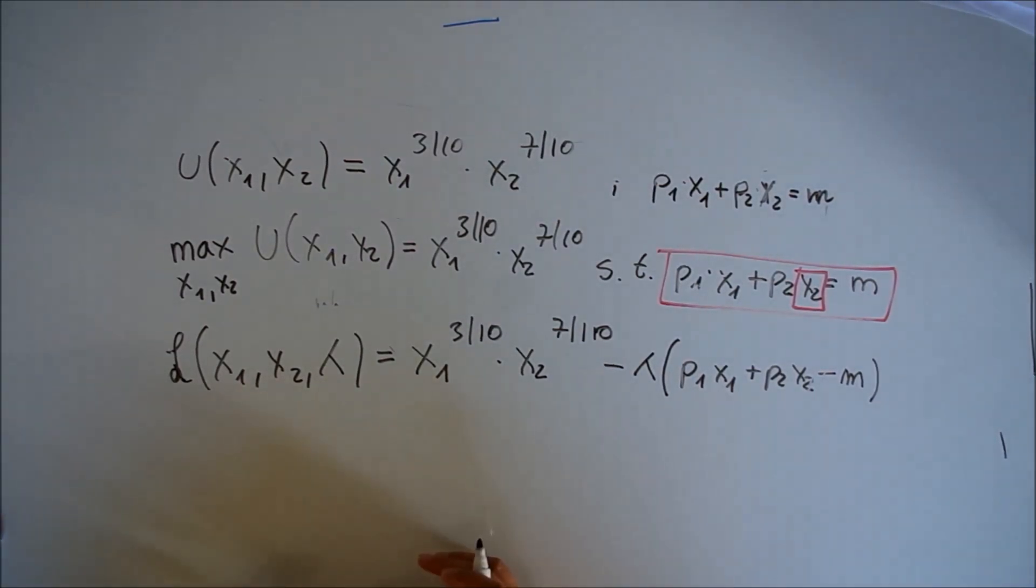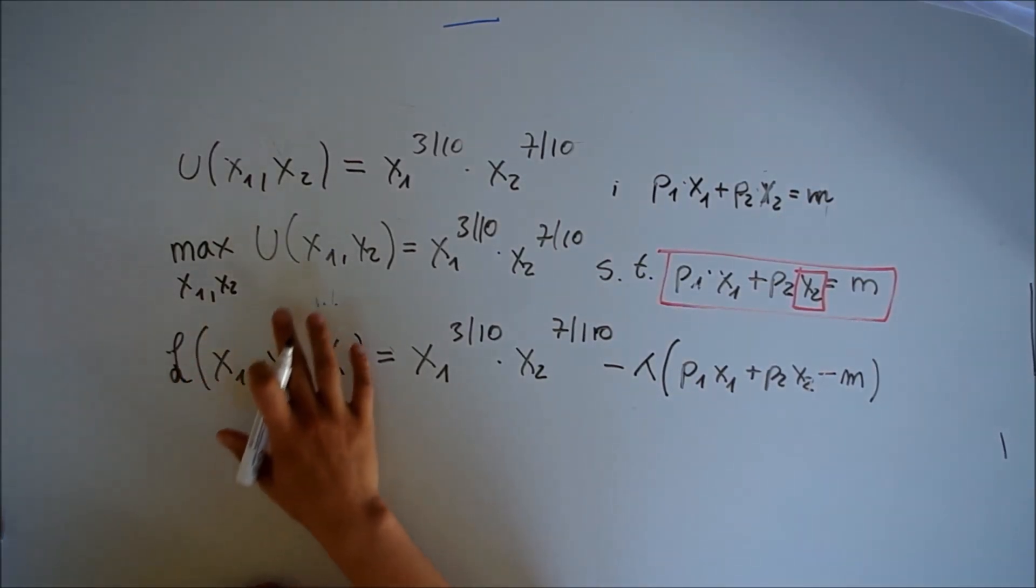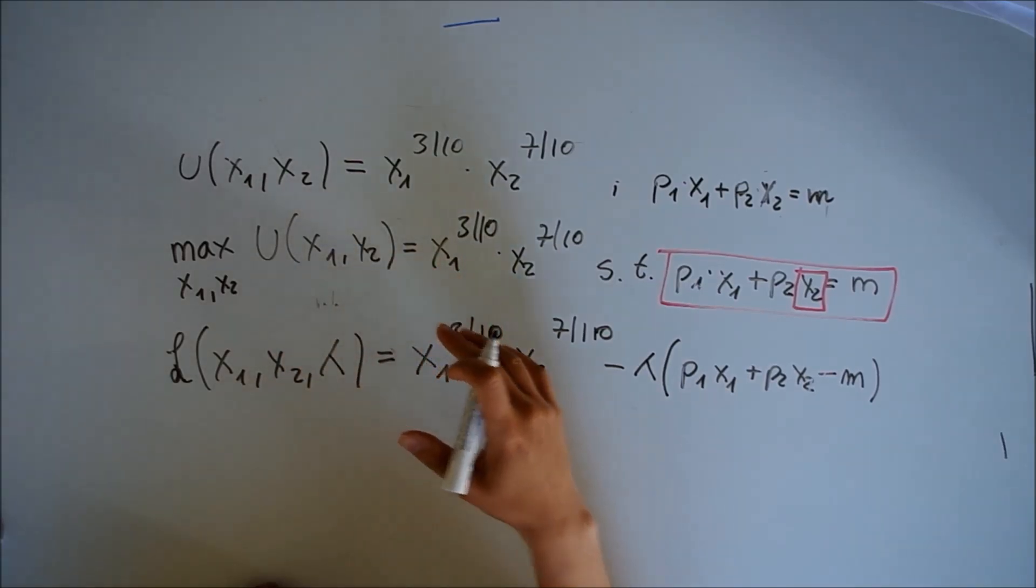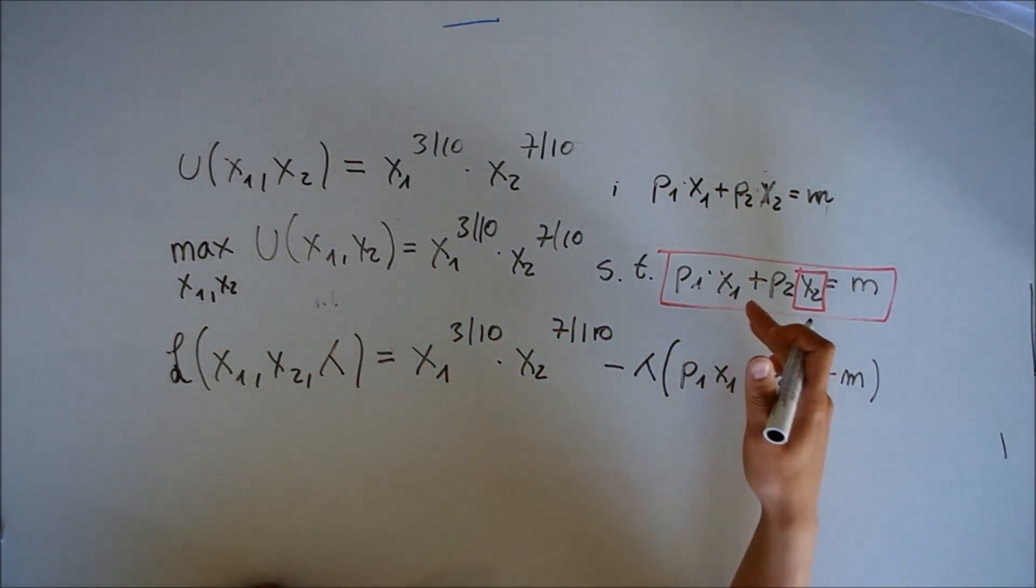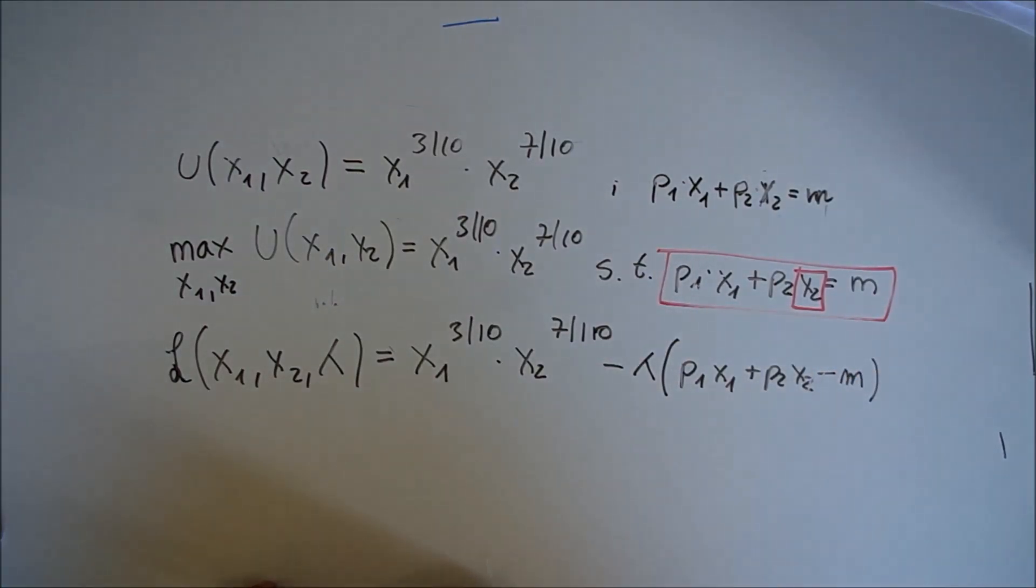We want to maximize x1 and x2 with the given utility function, subject to p1*x1 + p2*x2 = M. Using the Lagrange method, we can set up our objective function.